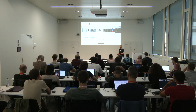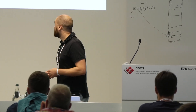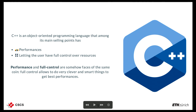We are going to talk about resource management, in particular about RAII, and we are going to see some concepts about it. C++ is an object-oriented programming language. The main selling points are performance and full control, and performance and full control are somehow two faces of the same coin. Full control allows us to do whatever we think is best, but it is also hard to do everything.